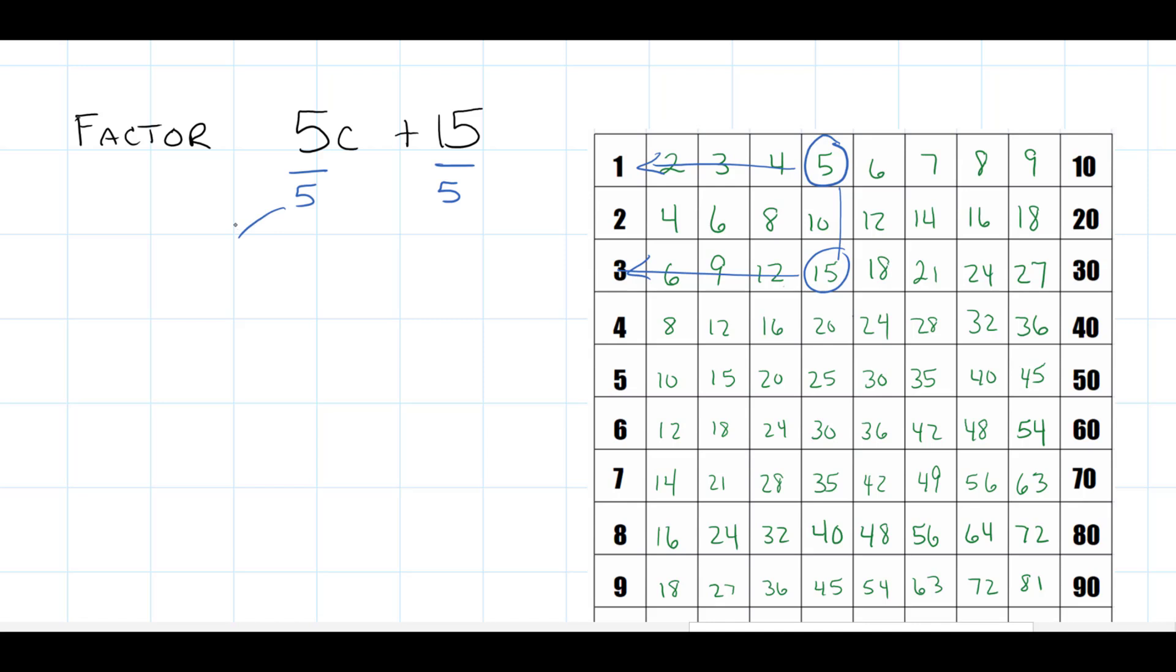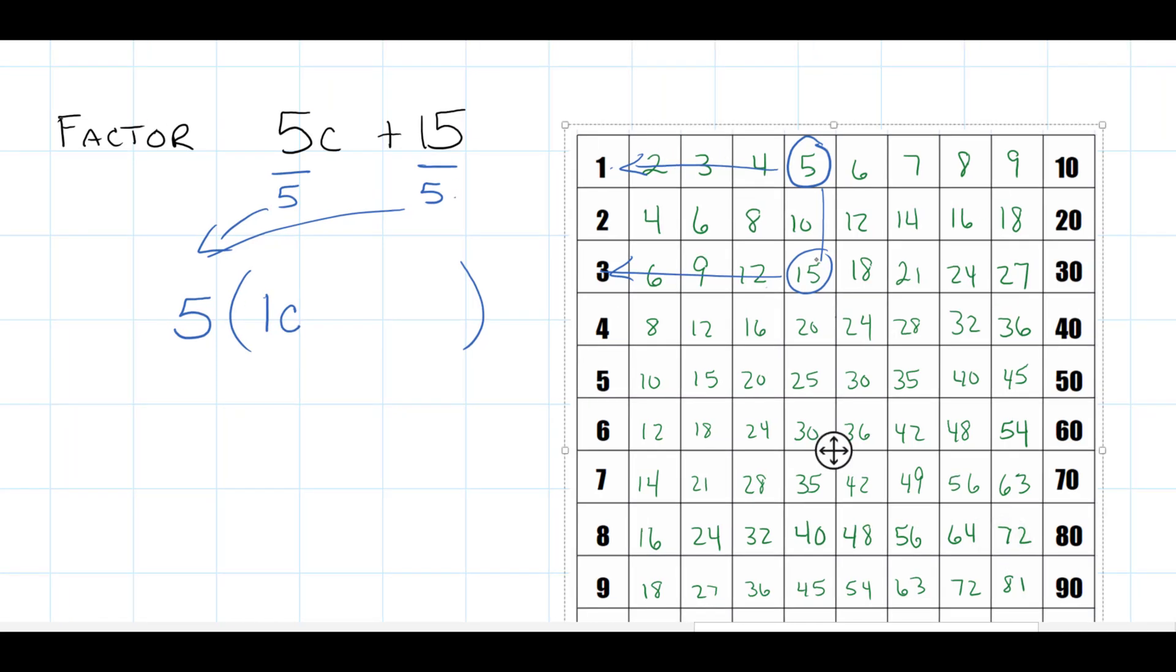What actually can be factored out of this expression is the number 5. What are we multiplying by now? Well, 5 goes into 5 once—we see it in our jump count—so I can write down 1c. And 5 goes into 15, we see on our jump count, three times.